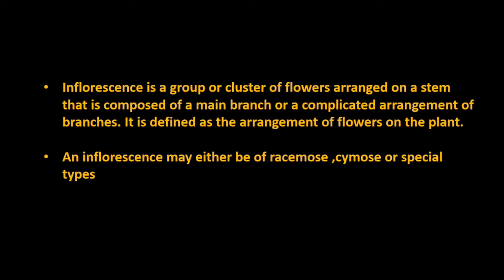Inflorescence is defined as the arrangement of flowers on a stem that is composed of a main branch or a complicated arrangement of branches. Inflorescence may be either racimose or cymose, or even a special type of inflorescence. So there are three categories: racimose inflorescence, cymose inflorescence, and special type of inflorescence.